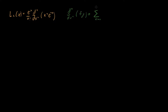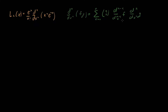The general Leibniz rule is a sum from k equals 0 to n of n choose k — so we have our binomial coefficient — times the (n minus k)th derivative of f times the kth derivative of g. You can see the parallel with the binomial theorem: we have the binomial coefficient and then n minus k on one term and k on the other.